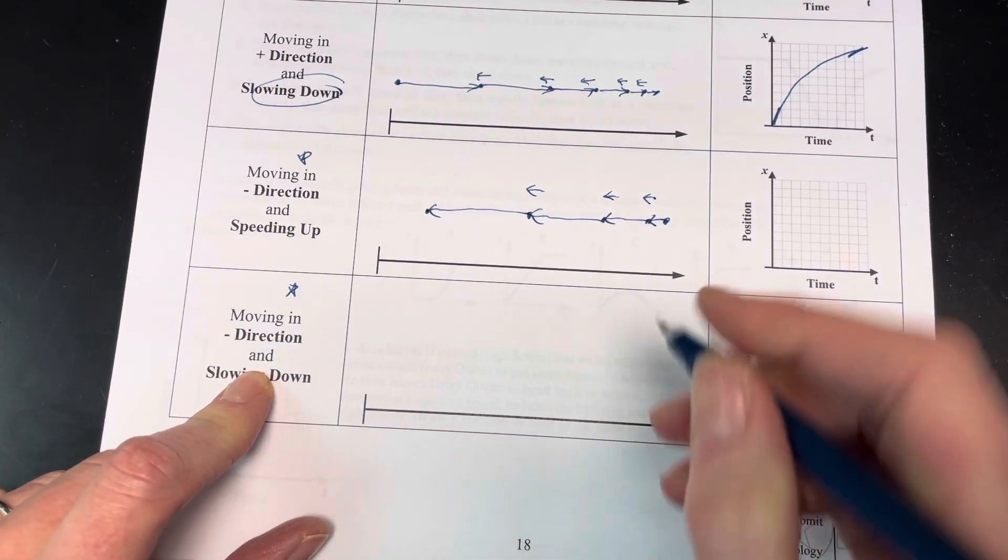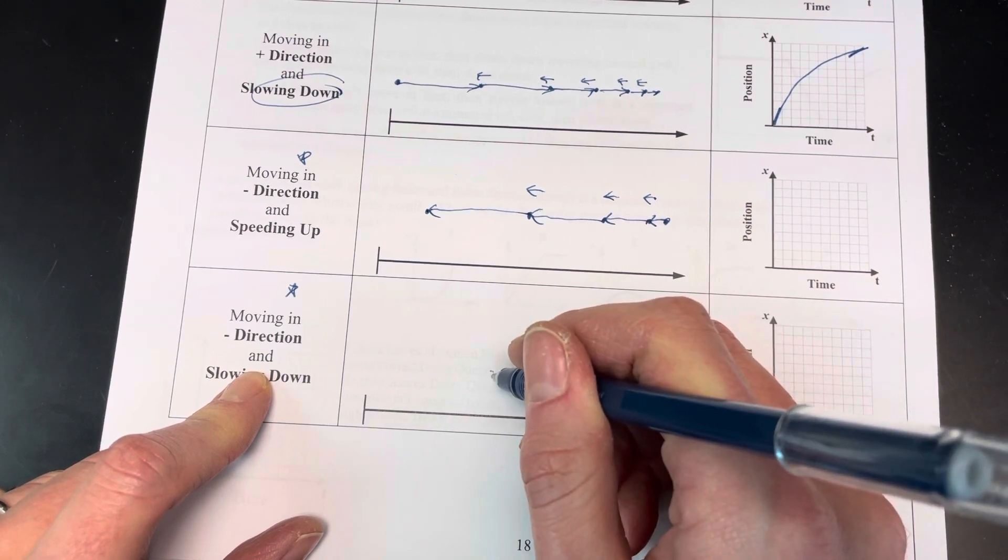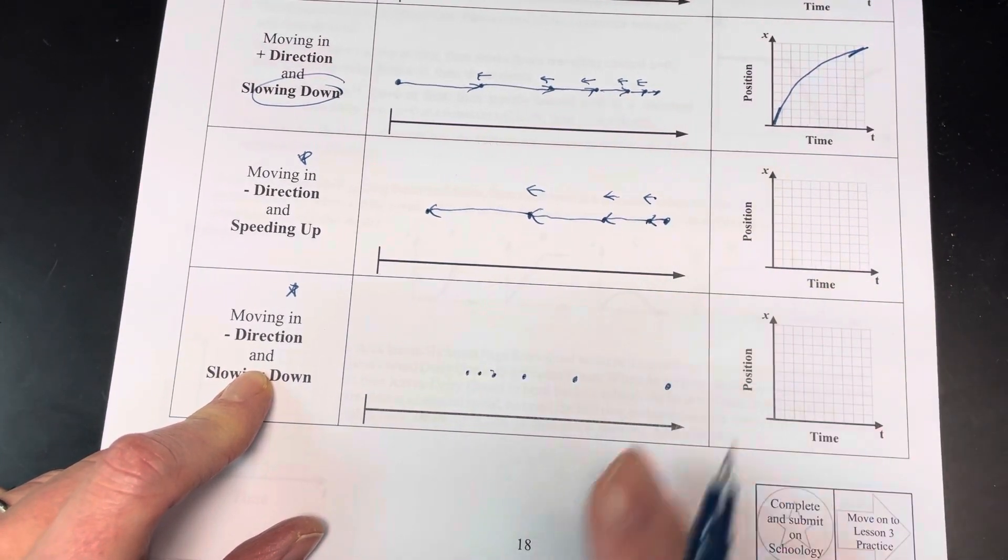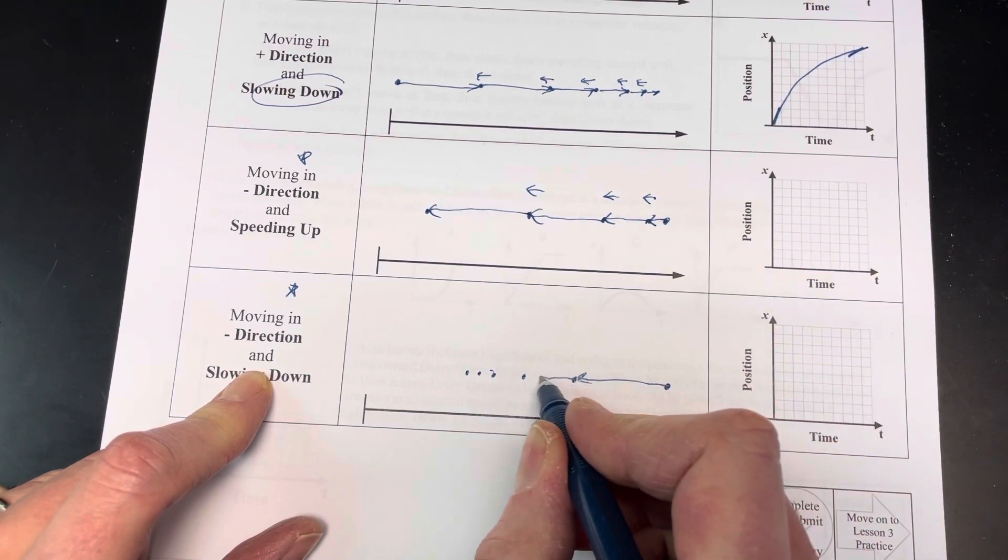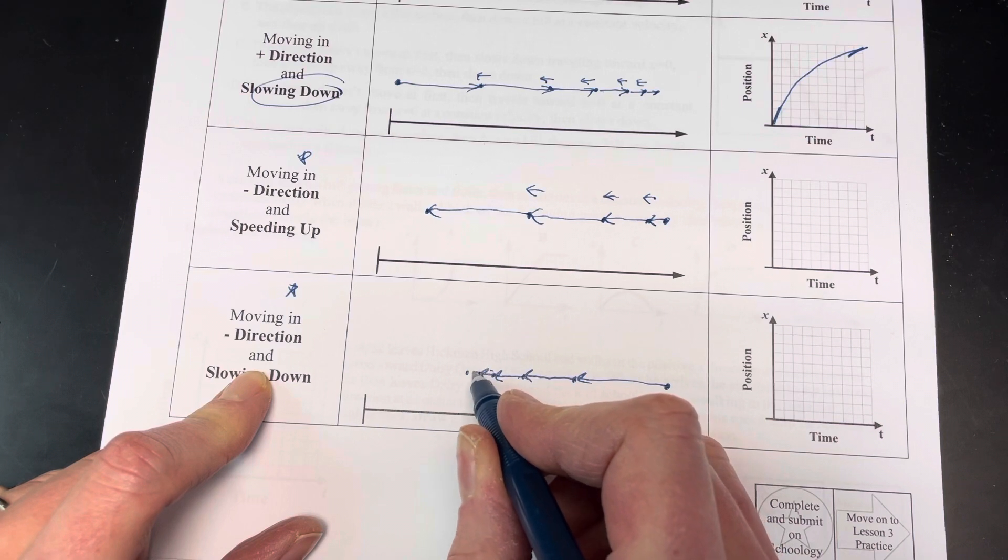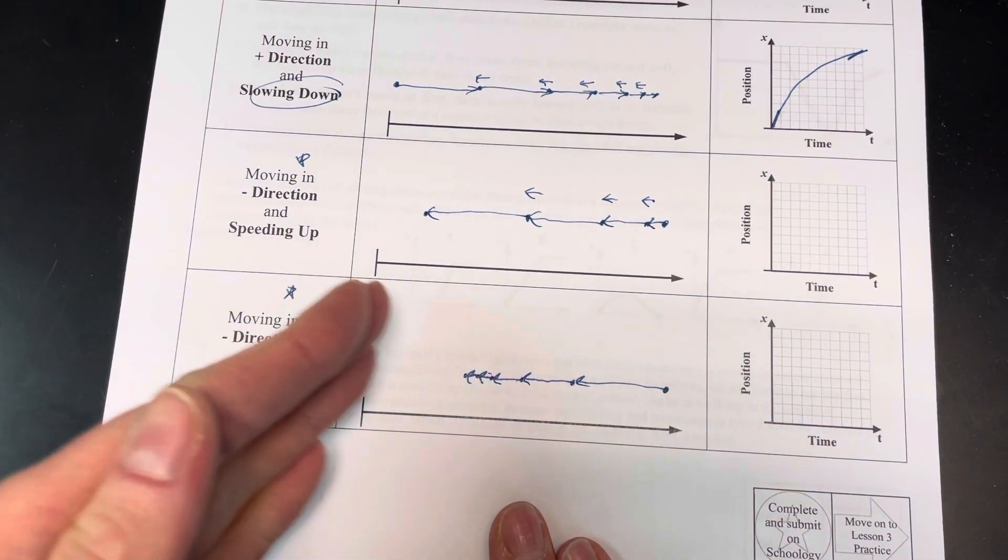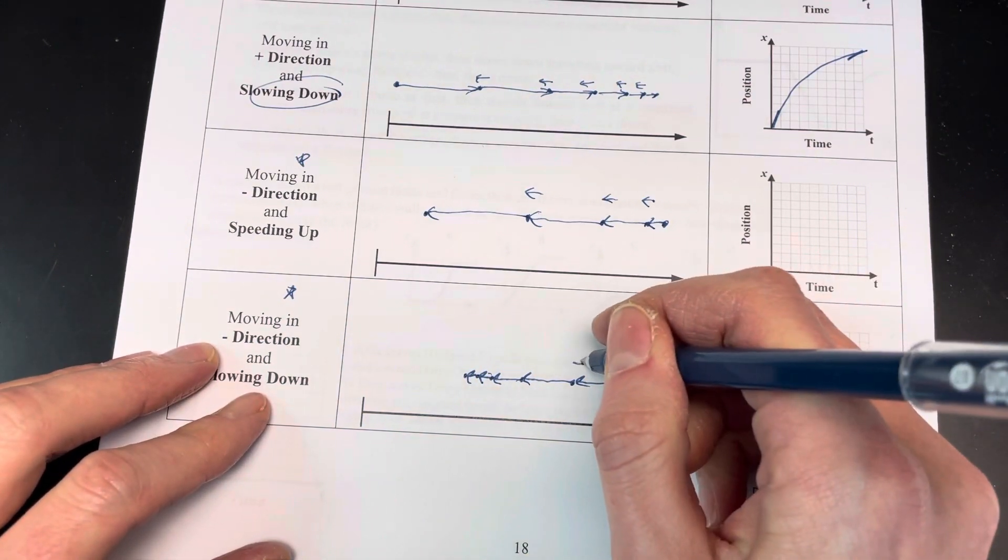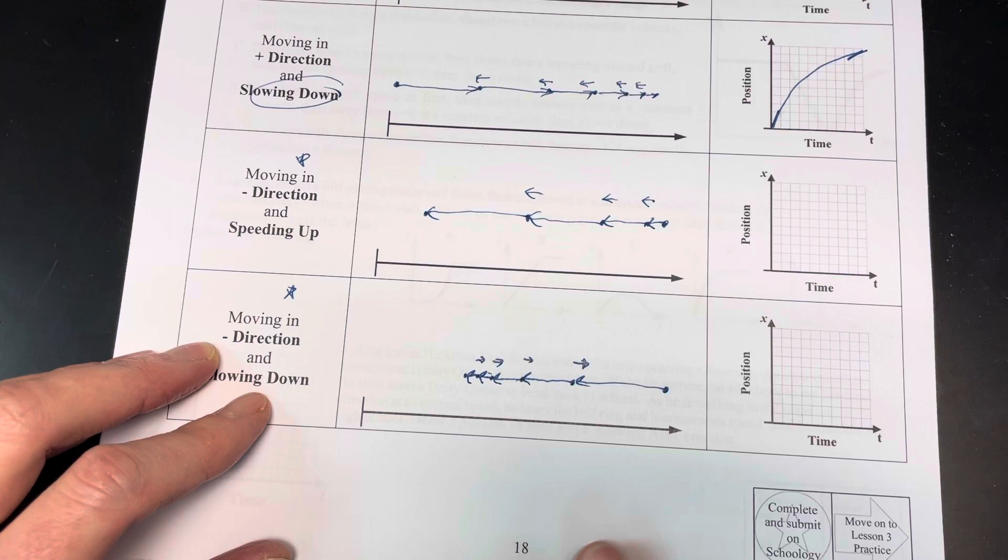If I'm going in the negative direction and slowing down, I'm going to have spread out dots get closer together like that. My arrows are going to start out long, and they're going to get shorter. Arrows get shorter, dots get closer. To get my object to do that, I have to stop it. I have to push it to stop it, so I'm going to push it that way. My arrows are going to point in that direction.